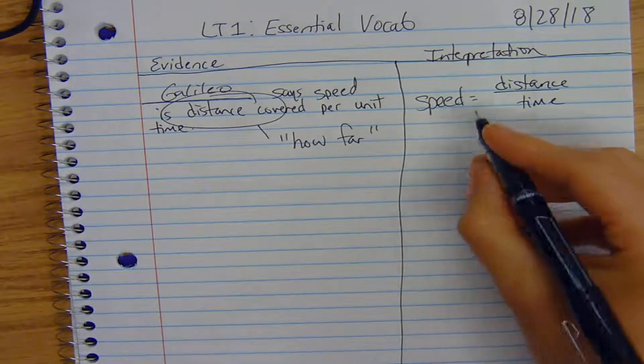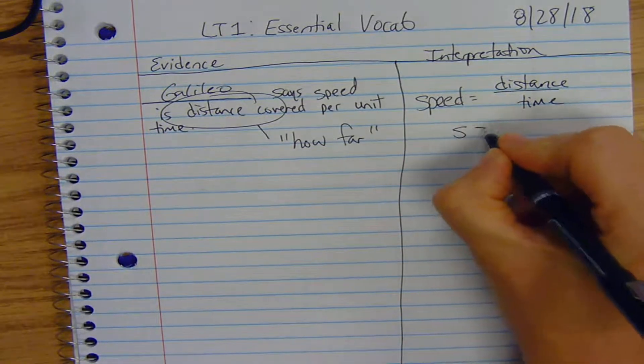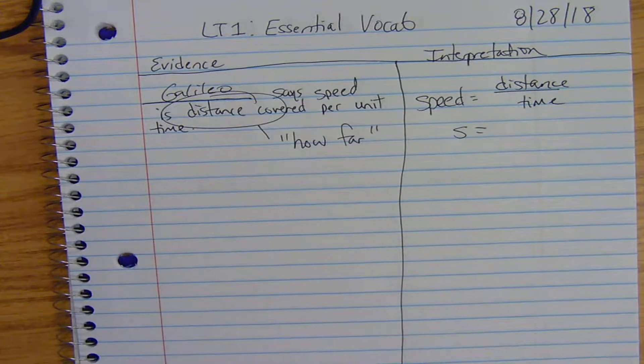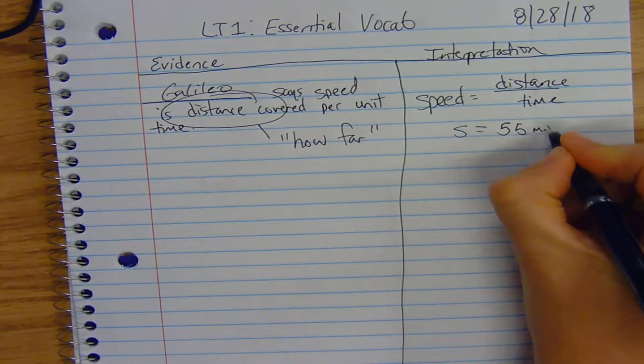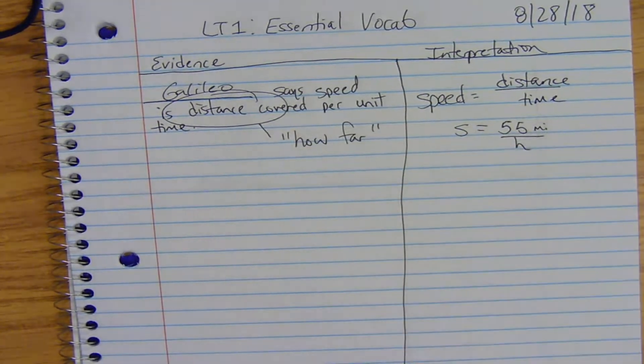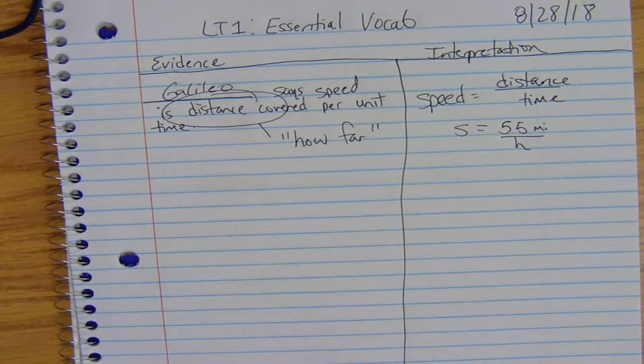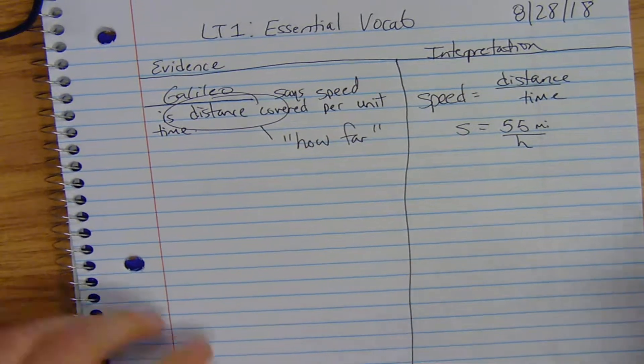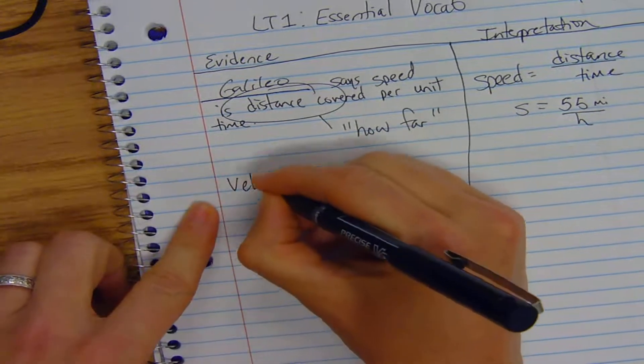All right. So, a speed, we'll use a lowercase s for it. We could say it's 55 miles in one hour because we're all rule followers. So, 55 miles per hour could be how fast you're going. This next one.